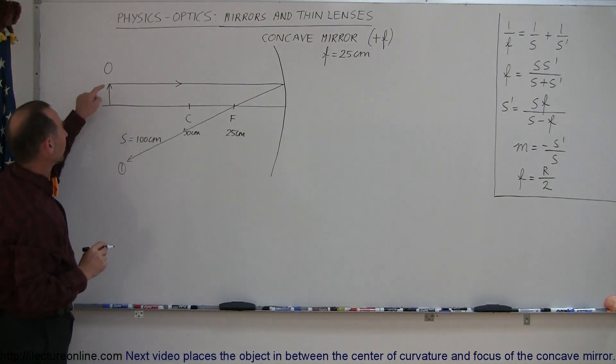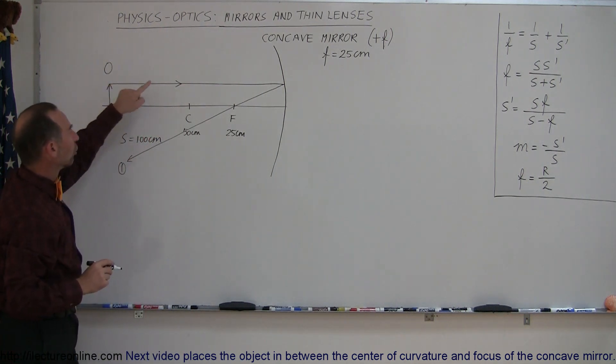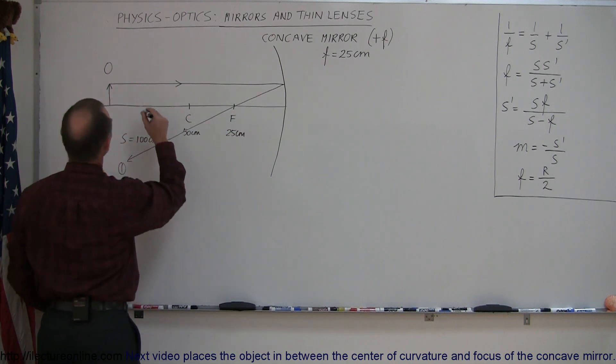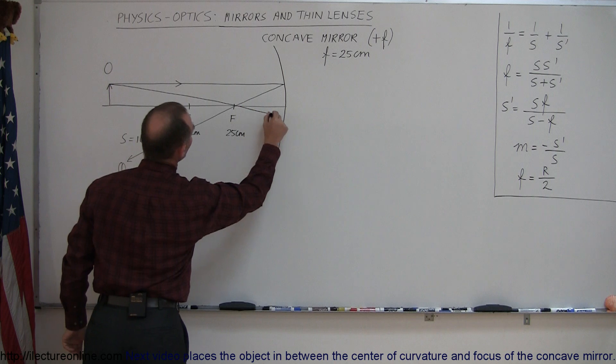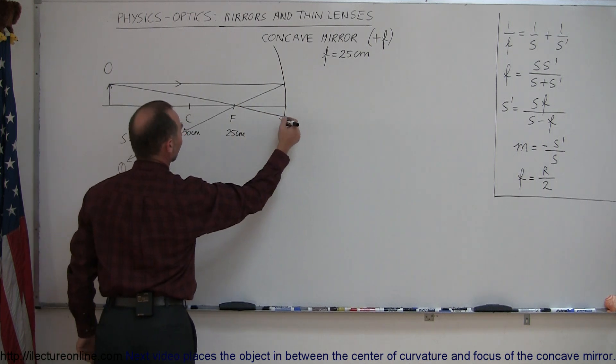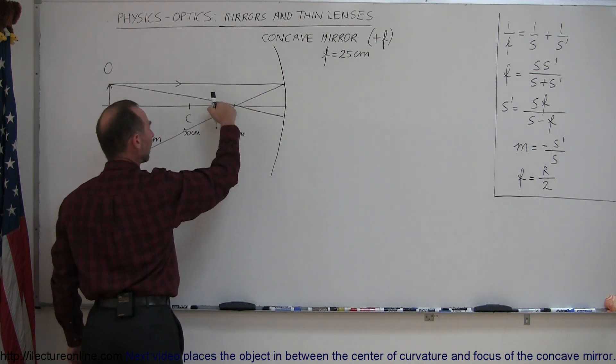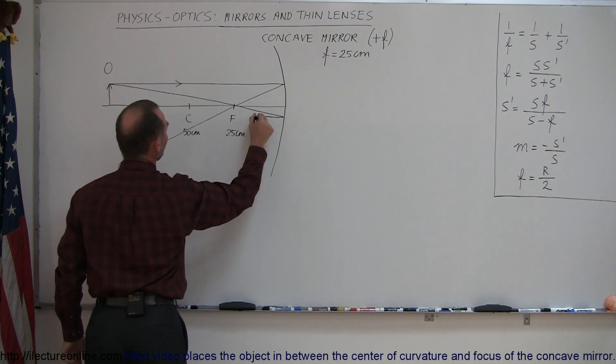Ray number two, we draw from the tip of the object through the focal point to the mirror. Here, and that kind of looks like this. When it hits the mirror, it's going to reflect back, and it's going to reflect back horizontally or parallel to the normal, this way, like this.